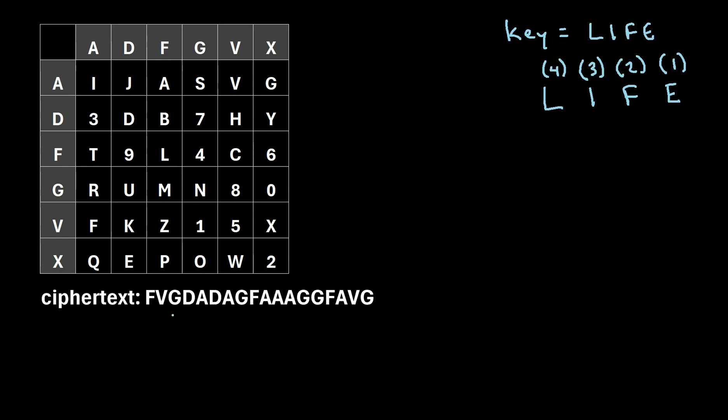Okay, let's say instead you're given ciphertext and you want to decrypt it using the ADF-GVX cipher. In order to decrypt it, you have to know the original Polybius square that was used to encrypt it and you have to know the keyword that was used to encrypt it.